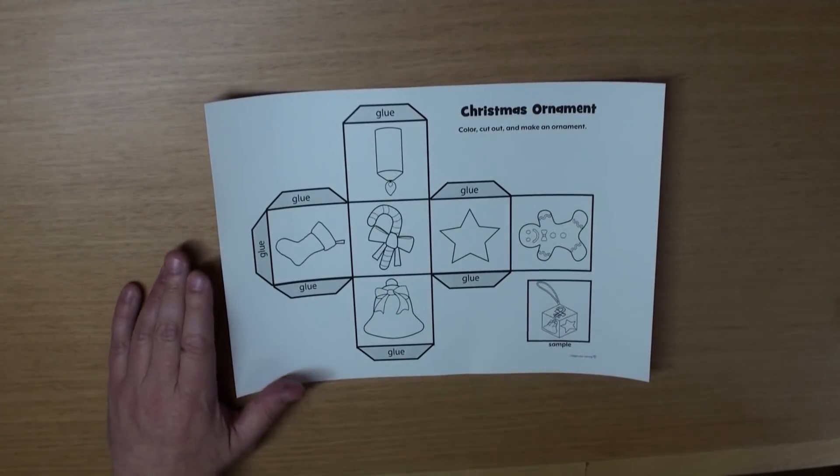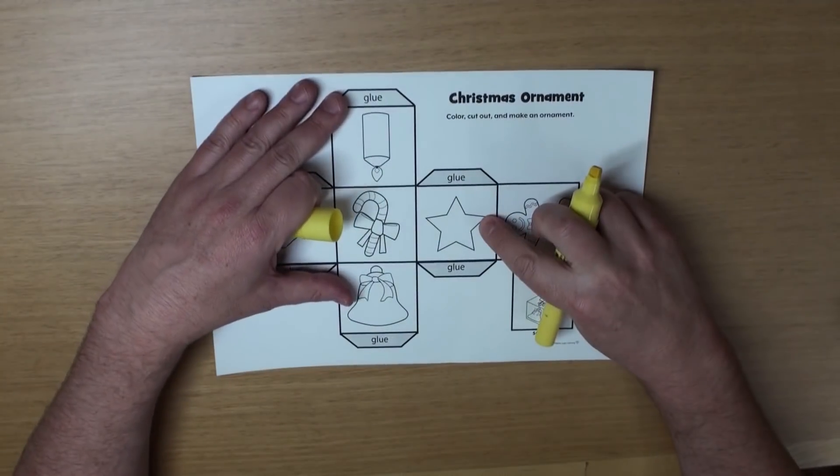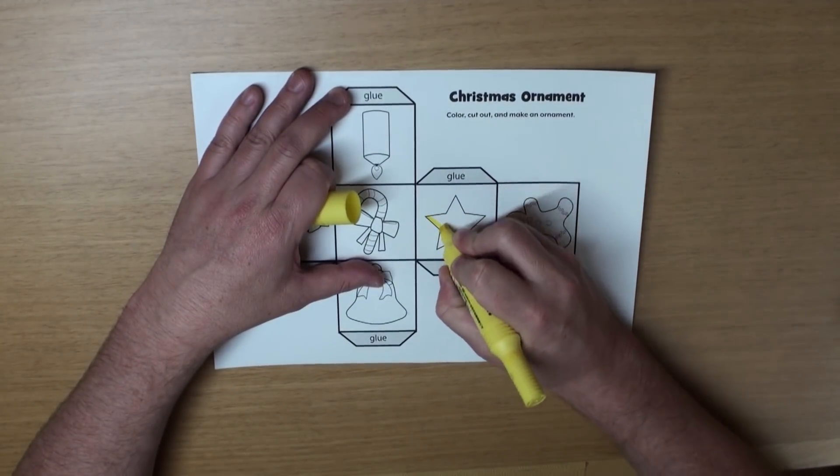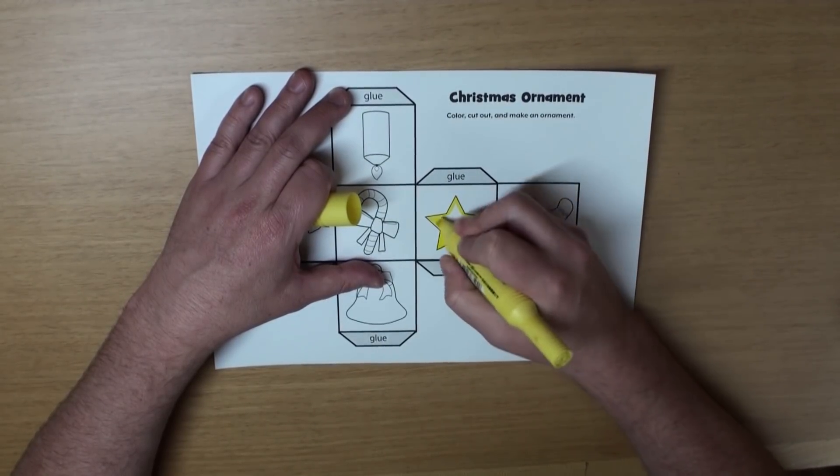Well, grab your crayons and... hmm, what's this? Yeah, it's a star. And I'm going to color my star yellow. Yeah!